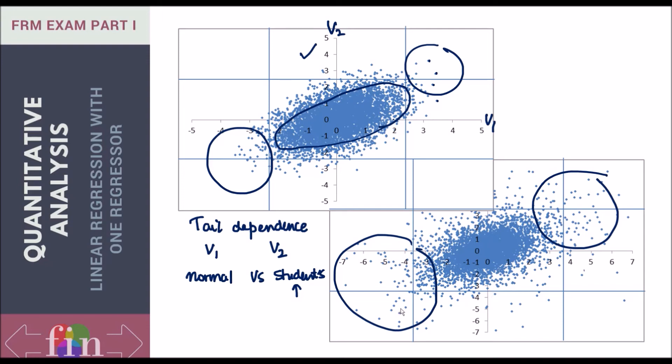In market stress periods, all stocks are moving down together, which implies they appear very highly correlated. If you have to model such scenarios, and risk managers do have to model such scenarios, then normal distribution would not be a good candidate.